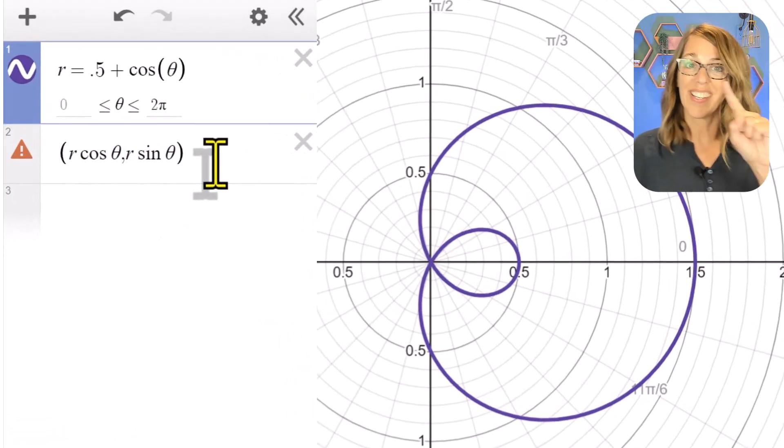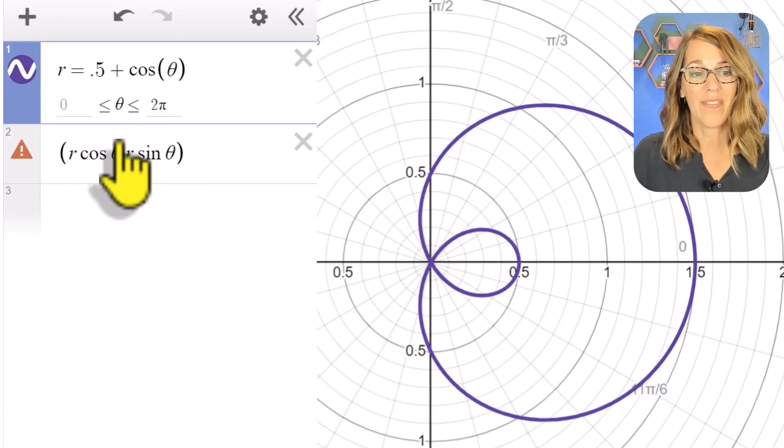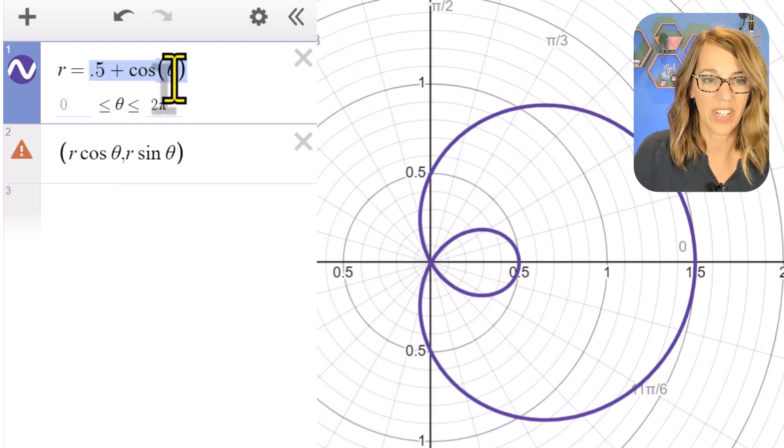In order to get points associated with my graph, I need to replace r with its definition, which is this. So I'm going to highlight and I'm going to do a Ctrl+C—you might do a Cmd+C if you're on a Mac.